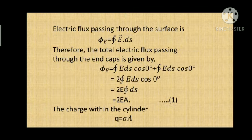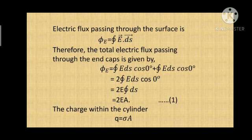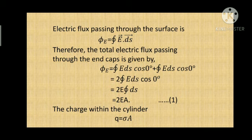The electric flux passing through the surface is phi_e = integral of E dot dS. Phi_e is divided into two parts. Therefore, the total electric flux passing through the endcaps is given by: phi_e = integral of E dS cos(0°) on flat surface 1, plus integral of E dS cos(0°) on flat surface 2, which gives us 2 times integral of E dS cos(0°), which equals 2E times integral of dS. Therefore, phi_e = 2EA, where A is the cross-sectional area of the cylinder.